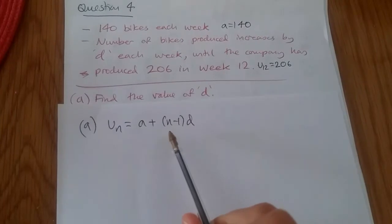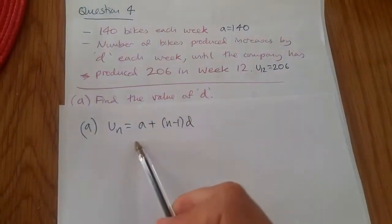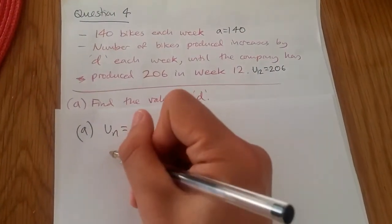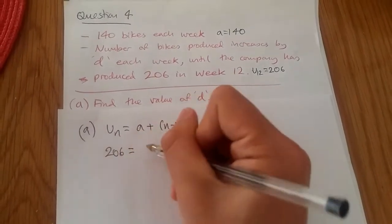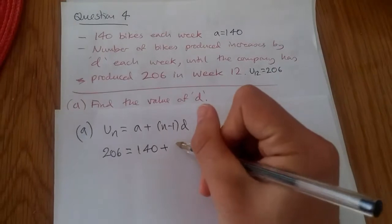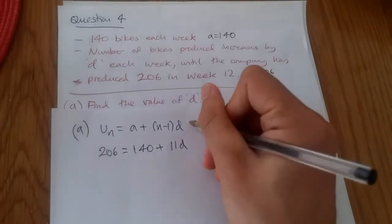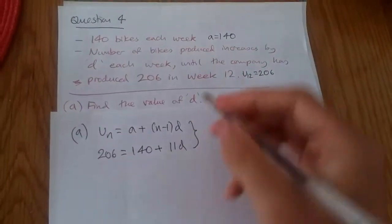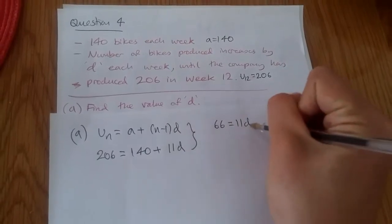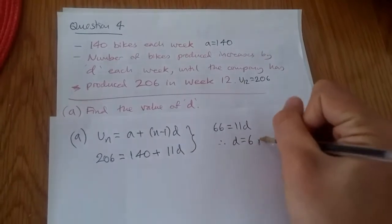So to find the number D, we first replace U12 here, place A of 140 and replace N of 12 because that's where we're at position 12. So if U12, we should have 206 on the left hand side equals 140 plus 12 take away 1 is 11 D. Now it's just a case of solving it arithmetically. So subtracting 140, which should leave us with 66 equals 11 D. And thus, dividing by 11 should give us a difference of 6 per week.